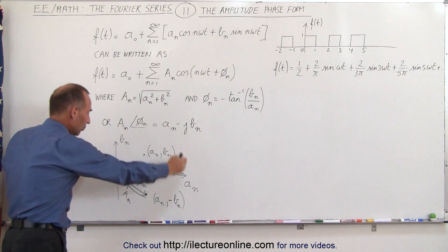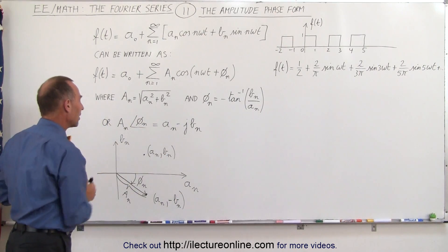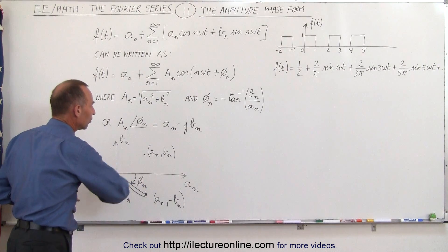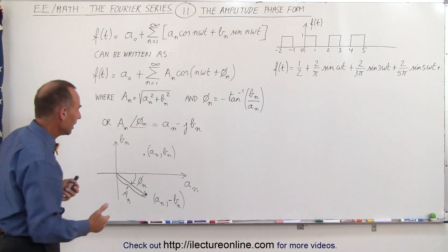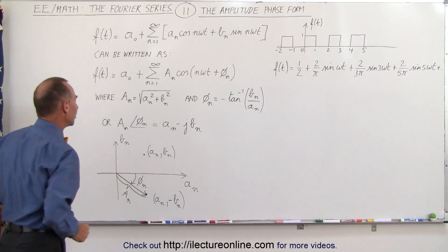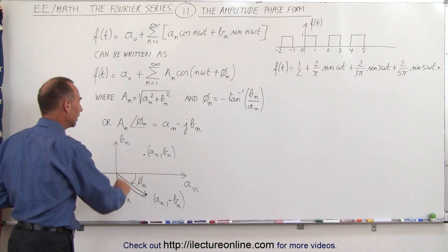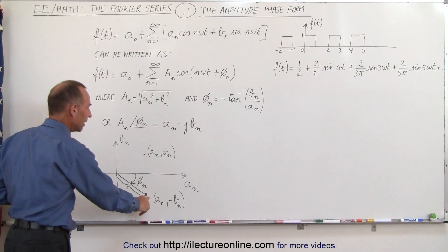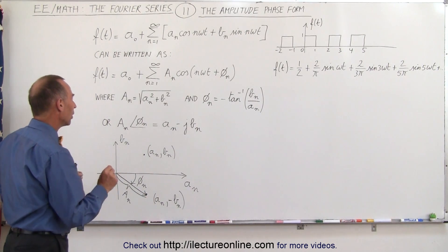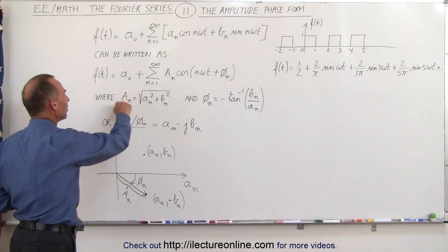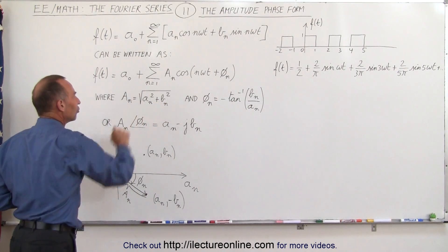If you imagine here what we have drawn out, if we think of a sub-n as being the real axis and b sub-n as being the imaginary axis, notice that this point here would be the positive a sub-n and the positive b sub-n, and here would be the positive a sub-n and the negative b sub-n. We can imagine that a sub-n is the amplitude of these two.